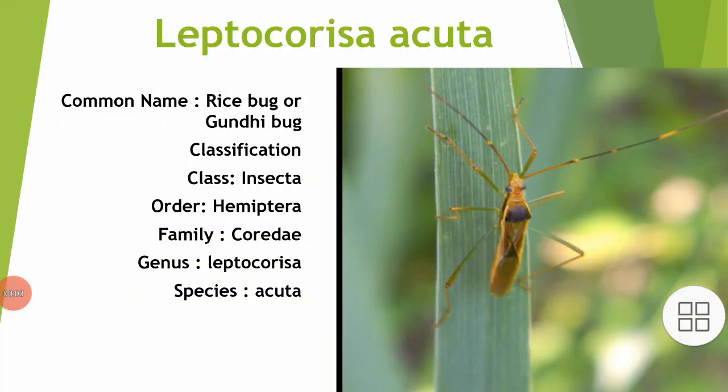Leptocorisa acuuta is one of the most important plant pests that causes damage in rice plants. Its common name is rice bug or gundi bug.